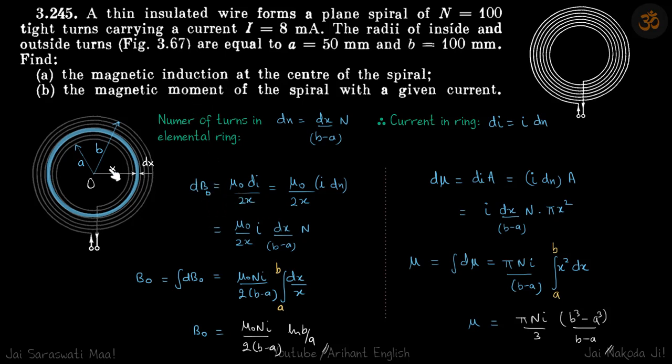Field at the center because of this circular loop is mu0 di by 2x. This is the small field db. We'll put the value of di here, i dn, and the value of dn here, so this is what we get.